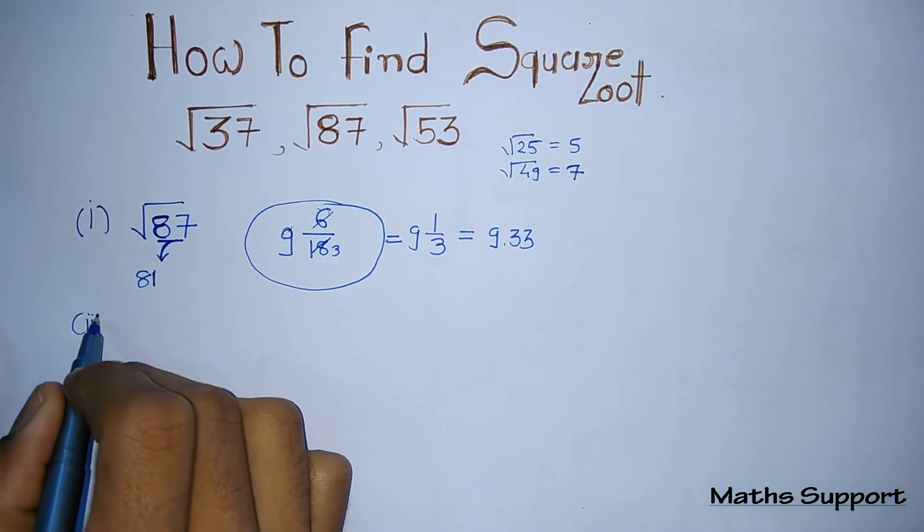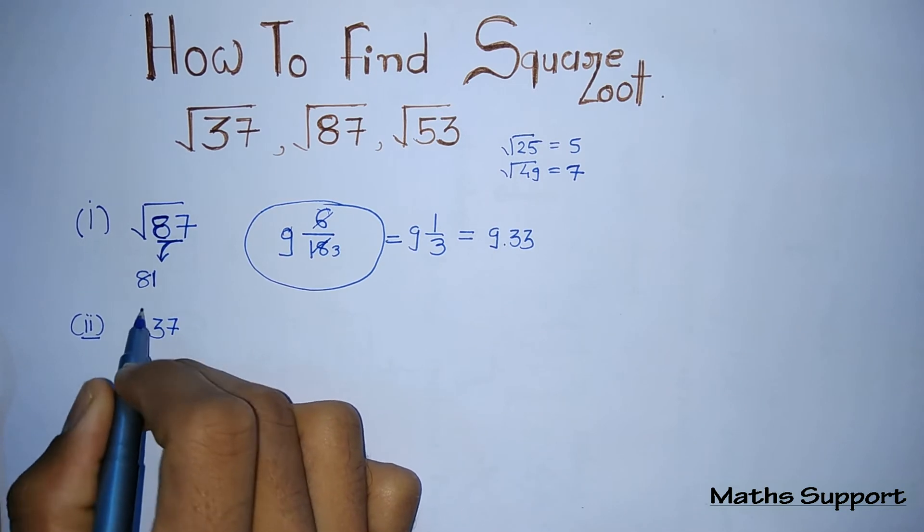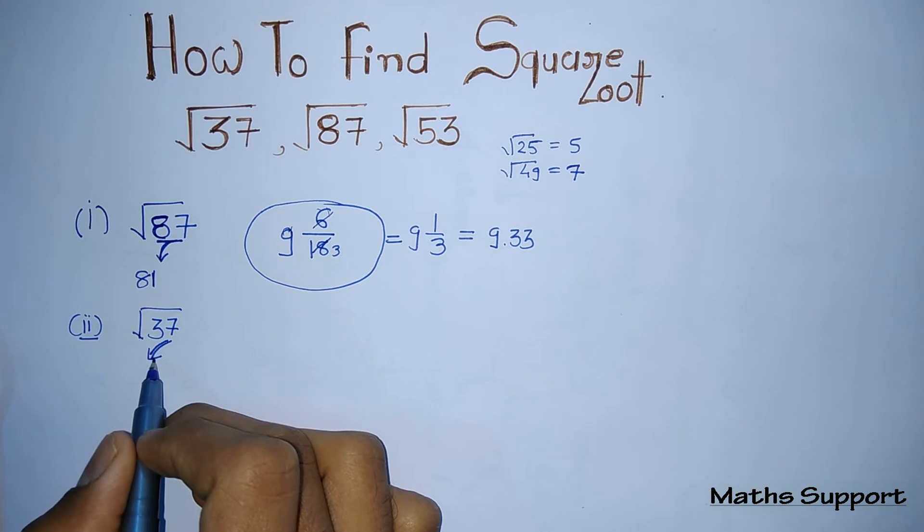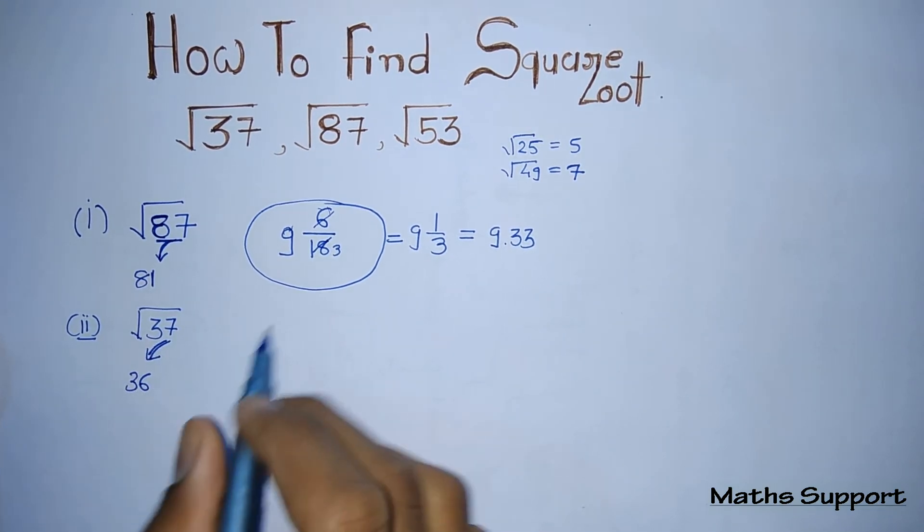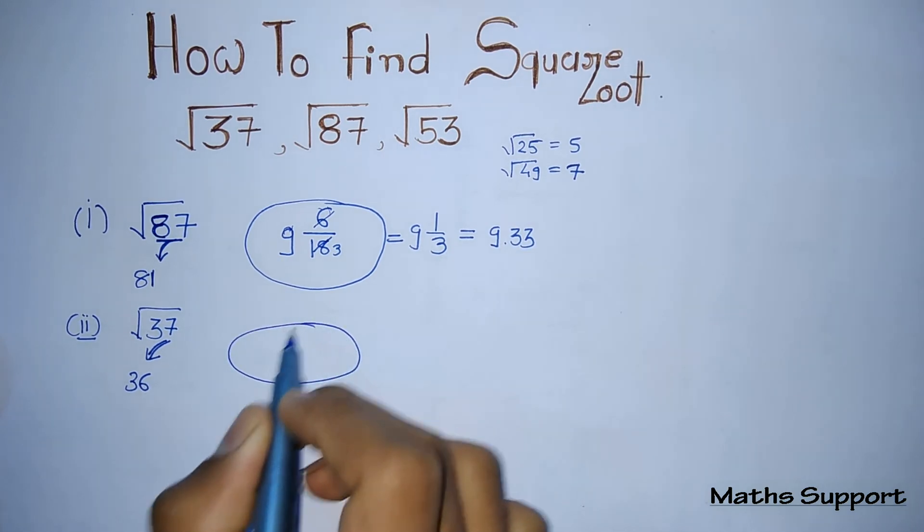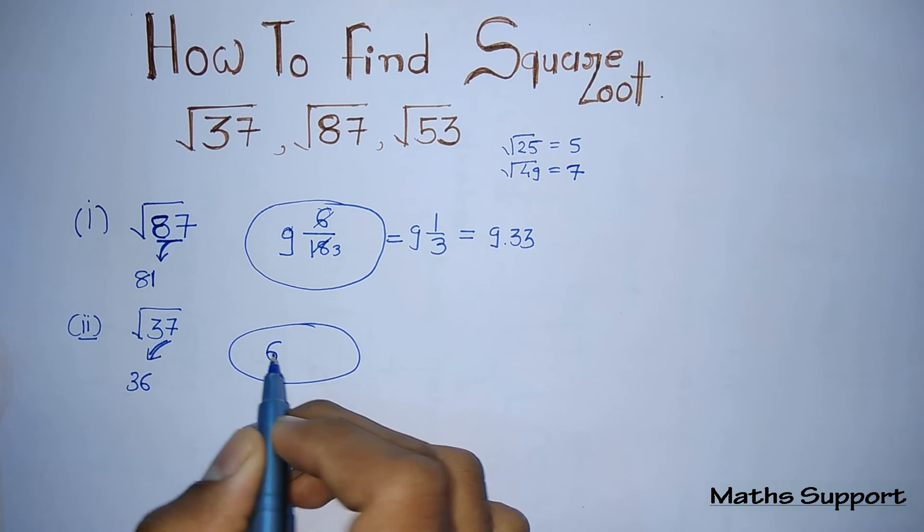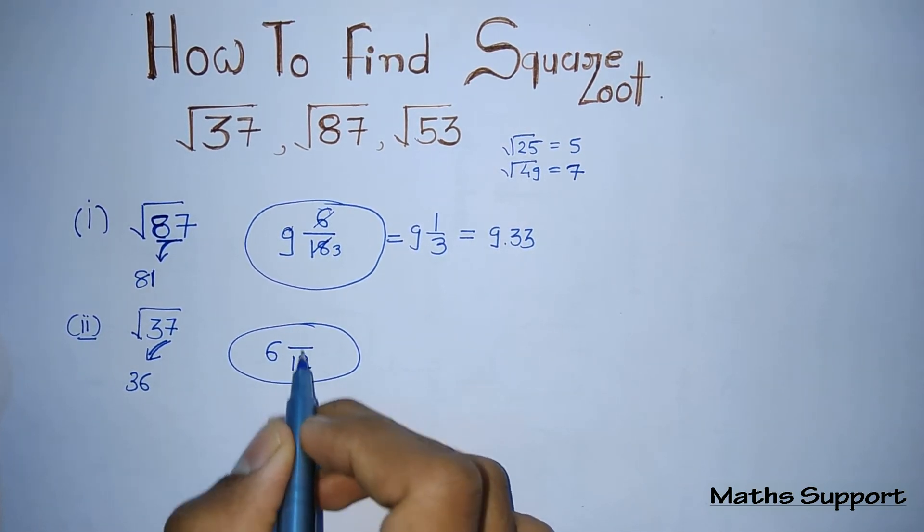Suppose you are given a second number, find the square root of 37. First step: find the nearer perfect square number smaller than this number, that is 36. Put the square root of 36, that is 6. For the denominator, double this value, that is 12.